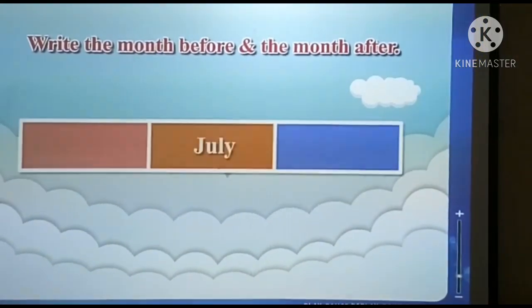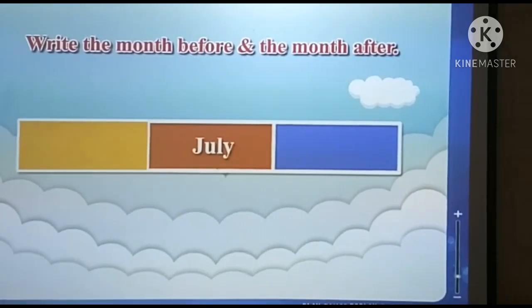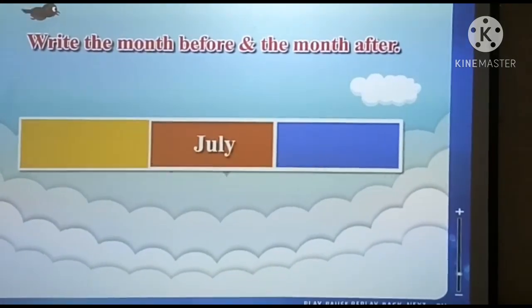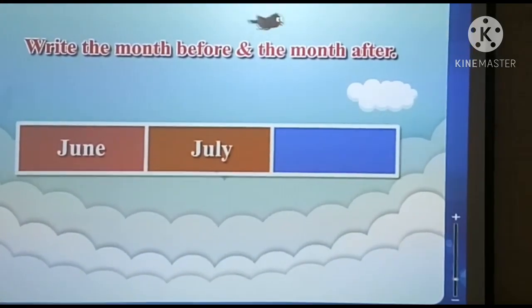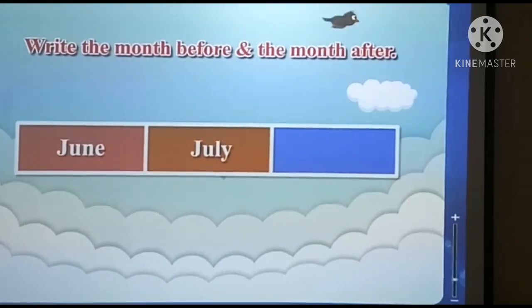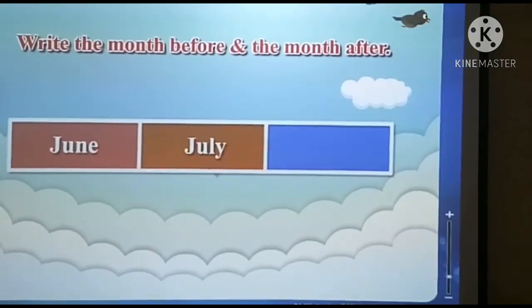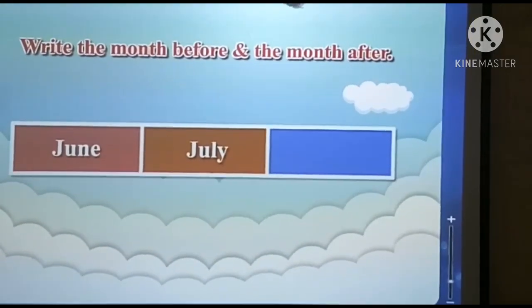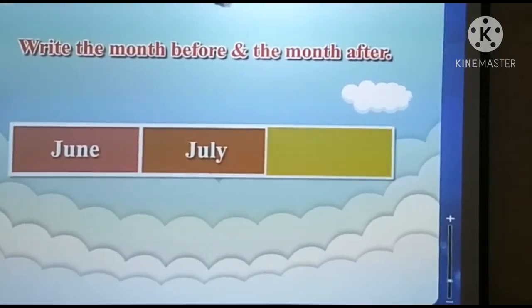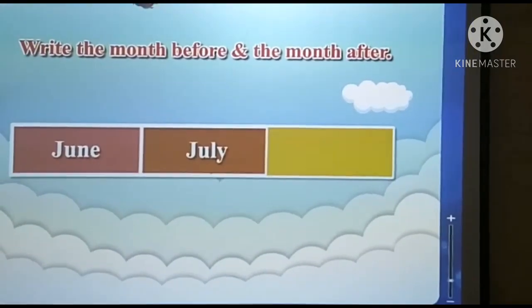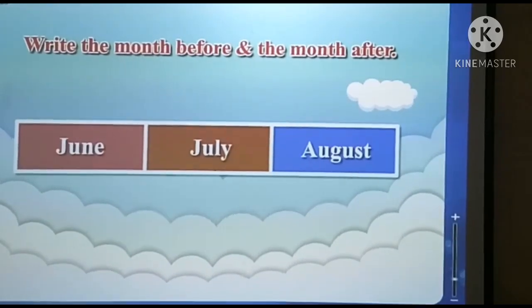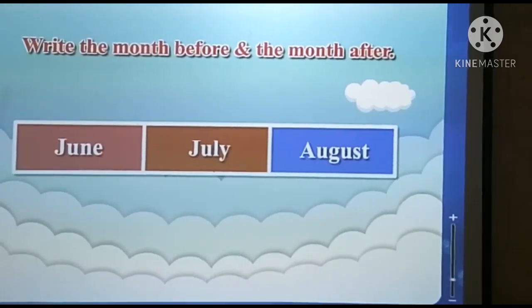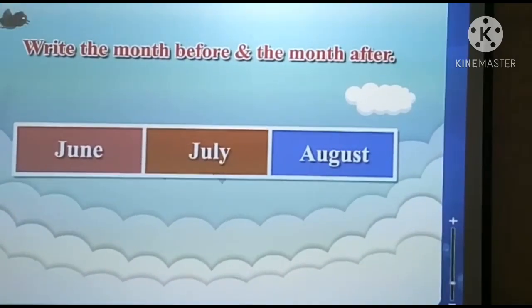Which is the month before July? June. June month comes before July. Which is the month after July? August. August month comes after July.